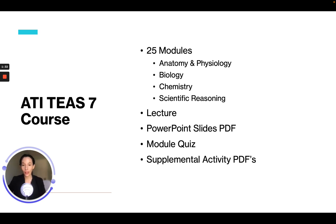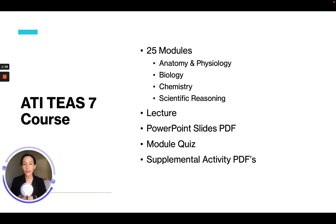Each module will then have a quiz to test you on the information that is in the slides. If you understand what is in the slides you should do well on the quiz, and this will prep you for actually taking the ATI TEAS science section. The quizzes will consist of a minimum of 10 questions, so you're actually getting over 250 practice problems. There will also be supplemental activities for most modules — things like hotspot questions, diagrams, and fill in the blanks — to help give you practice on the different topics we are going to cover.